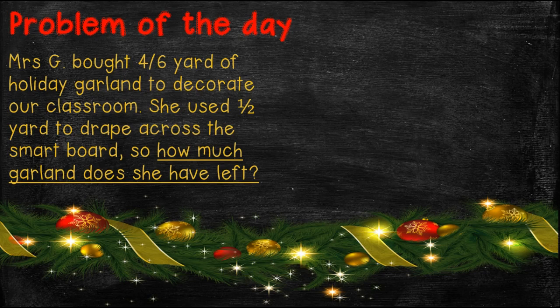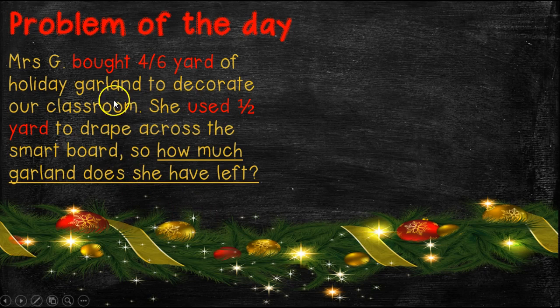Well, first we're going to underline the question so we know what we need to answer. The question here is how much garland does she have left? So now we're going to go through and look at our important information. Well, here we know that Mrs. G. bought 4 sixths of a yard and that she used one half of a yard.